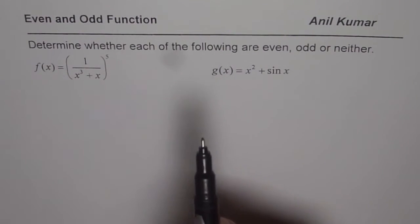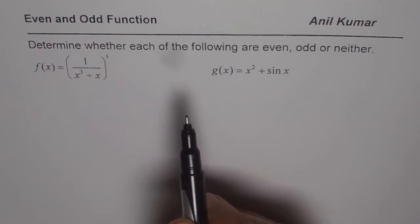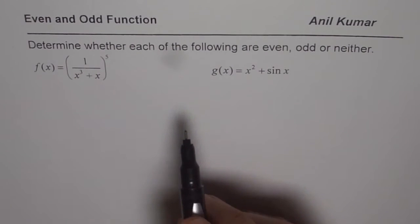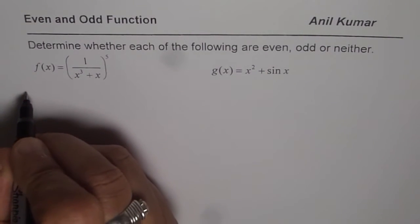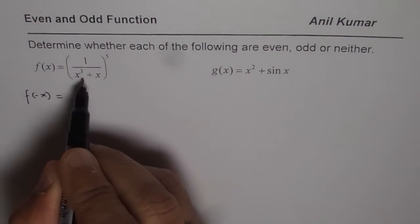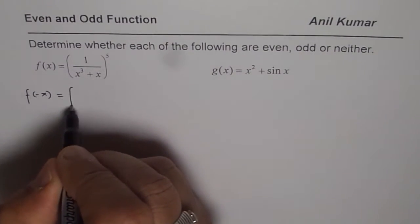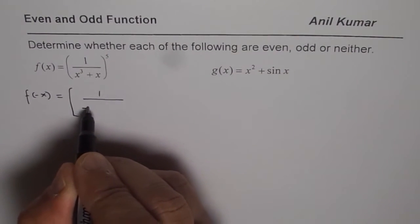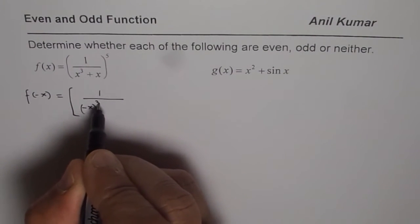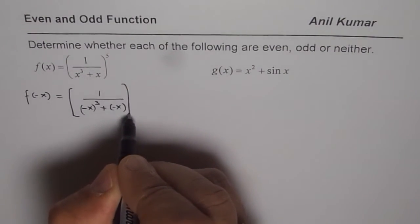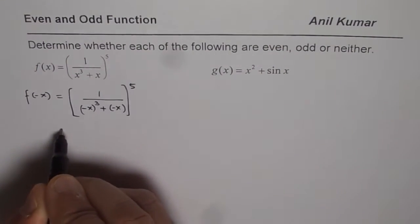So now let us continue and algebraically verify whether they are even or odd. To verify that, we have to check what is f of minus x. So we will substitute x with minus x. What we get here is 1 over minus x whole cube plus minus x to the power of 5.